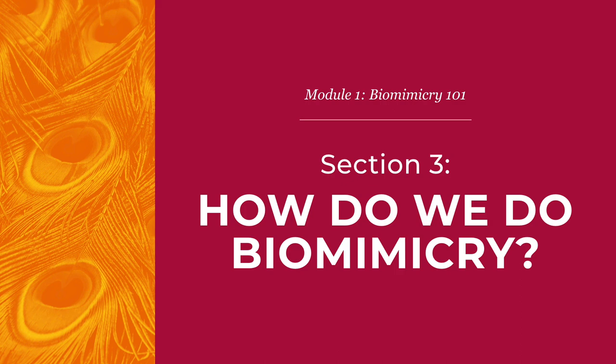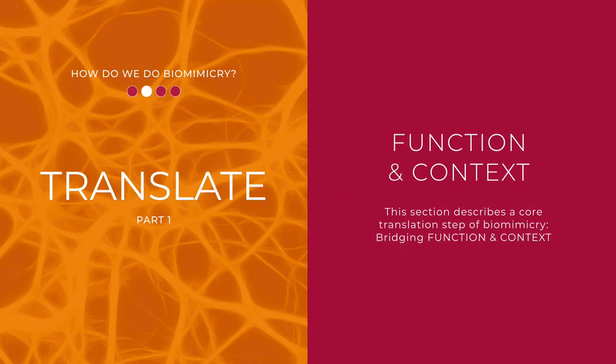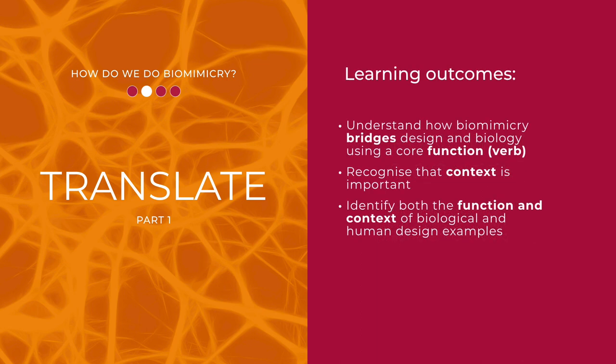This is the second step in section 3: how do we do biomimicry. Biomimicry is essentially translation, and the critical step in translating is looking at the function and the context. The purpose of this section is to understand how biomimicry bridges design and biology using function and context.